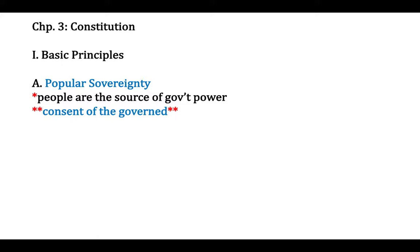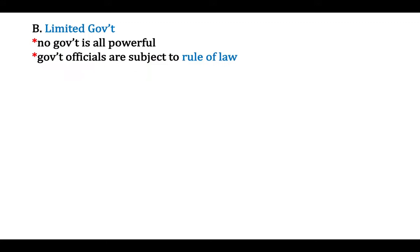The Constitution includes the amendment process, in which the people have a say-so in changing the Constitution. If we were to ever amend our Constitution again — add a 28th Amendment — we have that amendment process to reflect popular sovereignty, that people have the ability to change our Constitution as we see fit. We've amended the Constitution to abolish slavery, to extend voting rights, to extend citizenship rights. We even banned alcohol once and then made it legal again, and we've established a federal voting age. The amendment process is a great example of popular sovereignty — that people have the ability to change the government as they see fit.